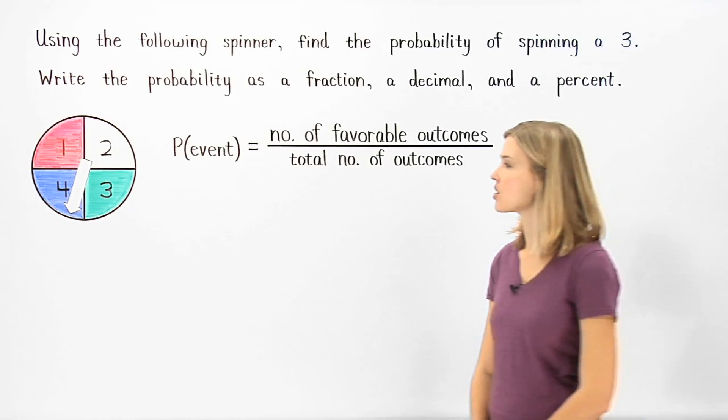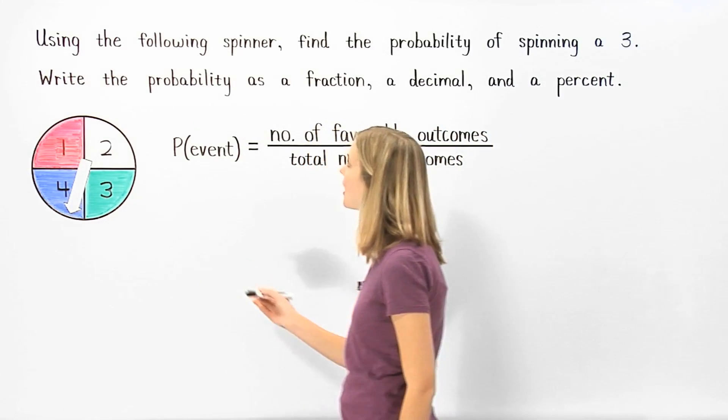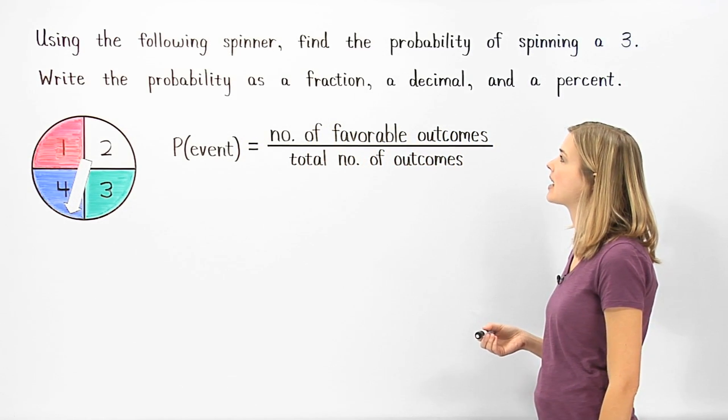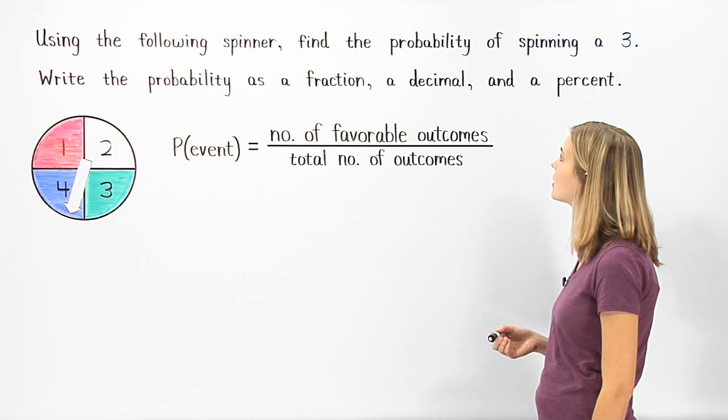In this example, we're asked to use the given spinner to find the probability of spinning a 3. Then we're asked to write the probability as a fraction, a decimal, and a percent.